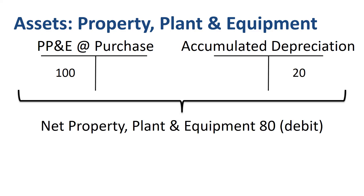The two accounts combined give you net Property, Plant and Equipment. 100 in assets minus 20 in CONTRA assets is net 80. This is what is meant by saying that CONTRA accounts are linked with another account and have an opposite balance — you subtract the amount in the CONTRA account from the other account's balance to get the net amount.